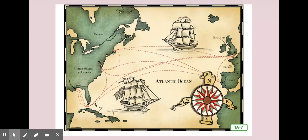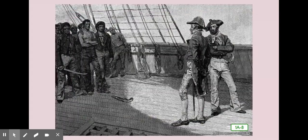Merchant ships weren't the only ships at sea — the United States and Great Britain also had naval ships. Life in the British Navy was not easy; conditions on their naval ships were terrible and punishments were harsh. Because of this, the British Navy had a hard time finding men who wanted to be sailors. To get more sailors, the British began to capture men from other countries' ships and force them to join the British Navy. Sometimes these sailors were British deserters, but more often the sailors seized weren't even British. They even seized many U.S. sailors. This practice of forcing men into the British Navy was called impressment.